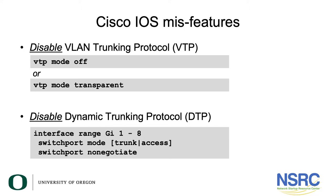All versions of IOS had the option 'VTP mode transparent', where the switch itself ignores VTP frames but still forwards them through its ports. We recommend you turn it off completely, and if you can't, make sure the switch is set to VTP mode transparent. The other misfeature is Dynamic Trunking Protocol, where the switch automatically detects if the port on the other side is in access mode or trunk mode.